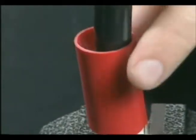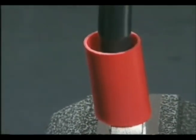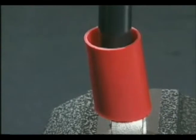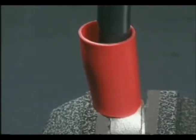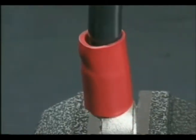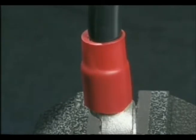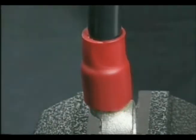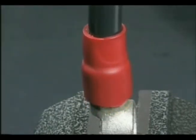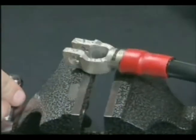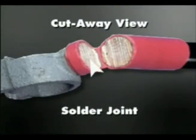Slide the heat shrink tubing over the barrel and apply indirect heat until the tubing is fully recovered. Remove the heat source and allow the connection to cool.